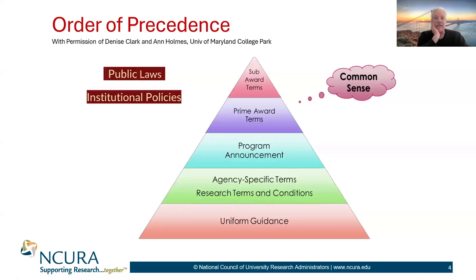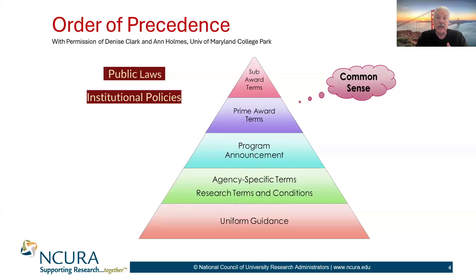These started out as individual OMB circulars issued for specific research entities — either universities, states and local governments, Indian tribes, or non-profits. Some of them were listed just for grants and cooperative agreements; others were for for-profit companies. Federal acquisition regulations came along with terms and conditions for contracts. In 2013, the Office of Management and Budget combined eight circulars into one document, which we now know as the Uniform Guidance, or UG.